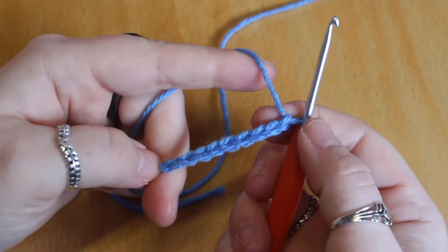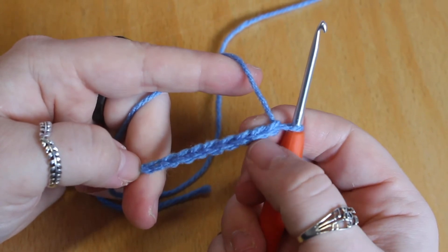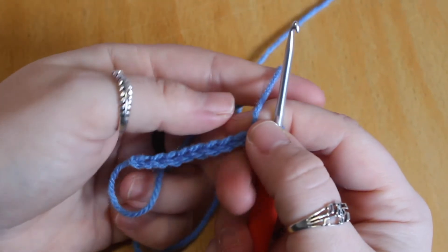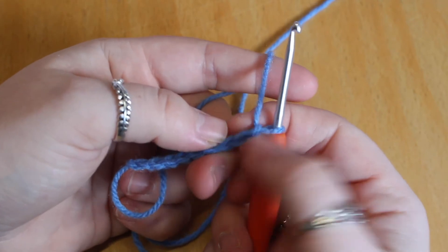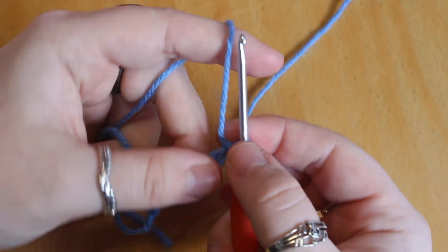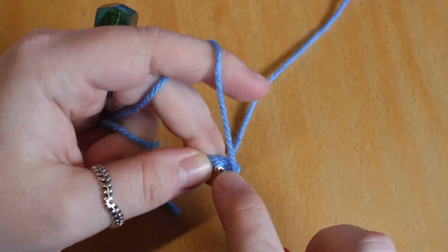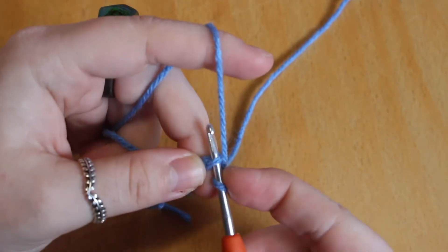Just like normal we're going to skip the first chain and start into the second chain, however rather than going into the front of the stitch here we're going to turn the chain over and pick up only the back bump of the stitch instead. Right here.